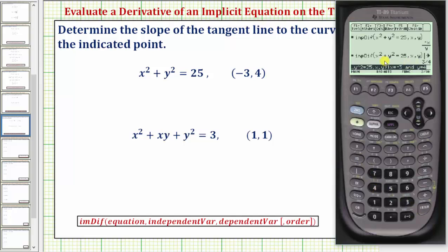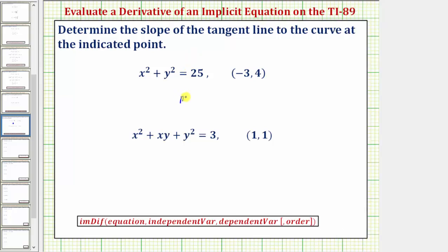And notice how it gives us the value of the derivative at the point negative three comma four is three fourths, which we can easily check by performing substitution into the derivative function dy/dx. So we now know the slope of the tangent line to the curve at the point negative three comma four is three fourths.